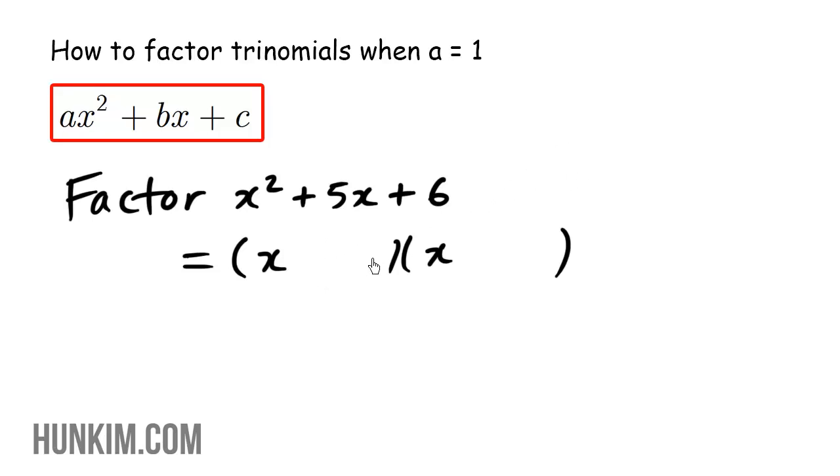Now the challenge here is to find two numbers that multiply to be six, what times what is six, yet adds to be positive five x. So let me just take back that last statement here. We're just going to focus on the number parts only. So what two numbers multiply to be positive six, yet add to be positive five. I'm just focusing on the coefficient of x here.